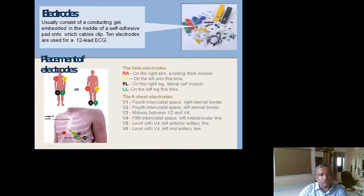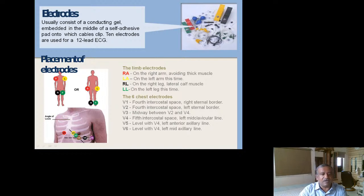The six chest electrode positions are: V1 in the fourth intercostal space at the right sternal border; V2 in the fourth intercostal space at the left sternal border; V3 midway between V2 and V4; V4 at the fifth intercostal space left mid-clavicular line; V5 at the level of V4 at the left anterior axillary line; and V6 at the level of V4 and V5 at the left mid-axillary line.